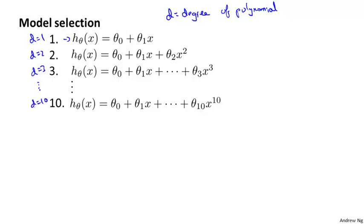We'd like to fit this extra parameter d, and concretely, we want to choose a model — that is, choose a degree of polynomial, choose one of these ten models — and also get some estimate of how well our fitted hypothesis will generalize to new examples.